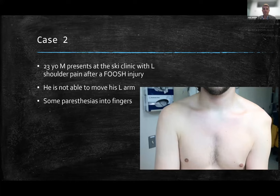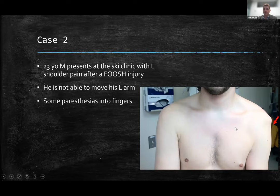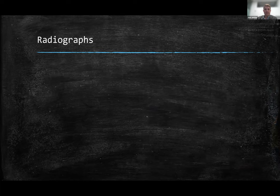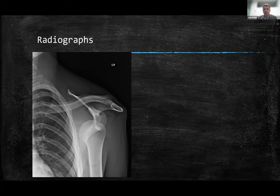Second case: a 23-year-old male comes into the ski clinic with a fall injury, not able to move his left arm, with paresthesias into his fingers. You can see asymmetry from right to left and that sulcus sign, suggesting a glenohumeral dislocation. On imaging, the humeral head is not in place — looks like an anterior dislocation. To confirm, you want a second view. If someone has a dislocated shoulder they're not going to want to put their arm up for an axillary view. The scapular Y view is great — shooting right down the plane of the scapula. If it's an anterior dislocation, the humeral head is going to be medial to the scapula; if posterior, lateral to the scapula.